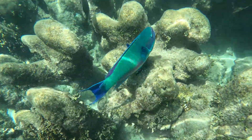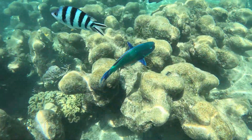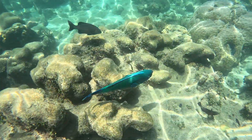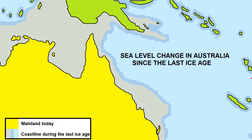The Great Barrier Reef is also considered to be the world's youngest reef system, with the modern reef we know today developing around 9,500 years ago with the sea level rises that followed the end of the last ice age.